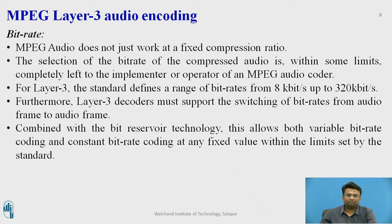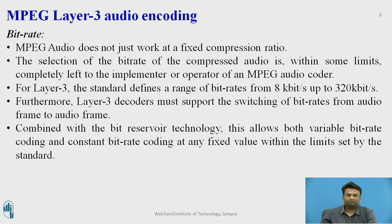Bit rates used in MPEG Layer 3 audio coding: MPEG audio does not work at a fixed compression ratio. The selection of bit rate is largely left to the implementer or operator of the MPEG audio coder. For Layer 3, the standard defines a range of bit rates from 8 kbps to 320 kbps. Layer 3 decoders must support switching of bit rates from audio frame to audio frame. Combined with bit reservoir technology, this allows both variable bit rate and constant bit rate coding.